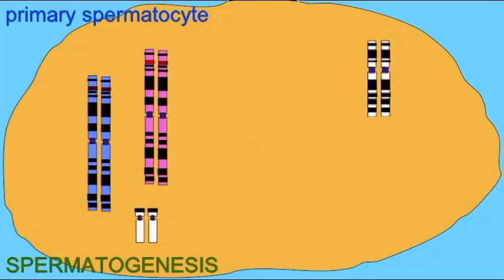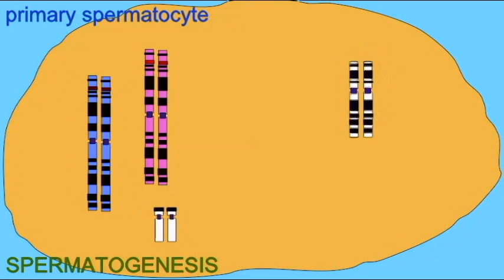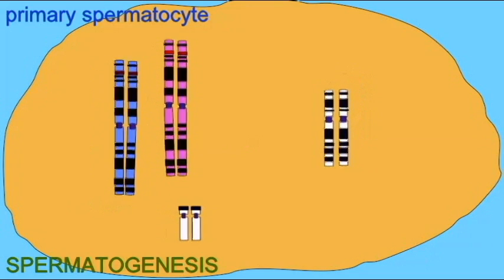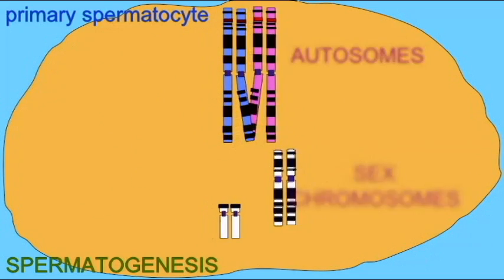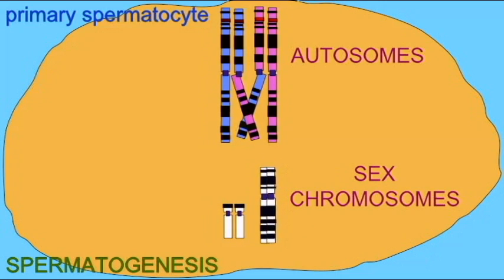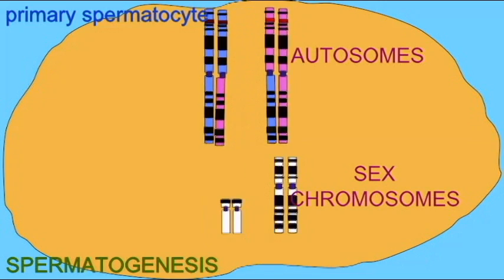During male gametogenesis, the two homologous X chromosomes will go to one of the secondary spermatocytes, while the two copies of the Y chromosome will go to a second secondary spermatocyte.